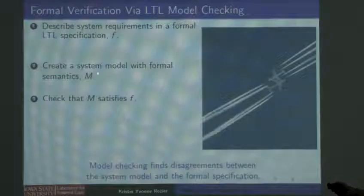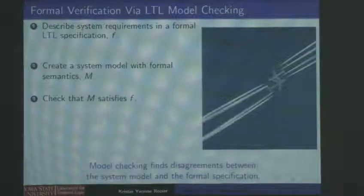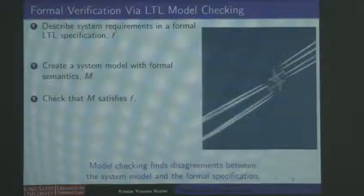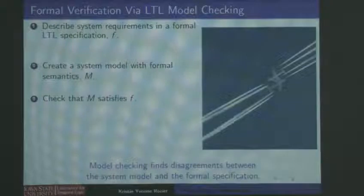Then we create some model with formal semantics M — a description of how your system behaves, essentially constraints on the satisfying assignments for your specification F. You could have an empty model where any variable can take on any value at any time — that's plain satisfiability. Or you can say your system works like this: you can only transition from this mode to these modes, so M restricts the next assignment of variables. We want to check that M always satisfies F — this is a great way to find disagreements between your system M and your safety requirement F.